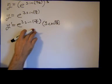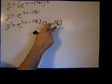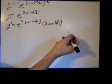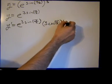And then we multiply by the derivative of the argument, which is x over 2. And the derivative of x over 2, that's like 1 half times x. The derivative of 1 half times x is just 1 half.